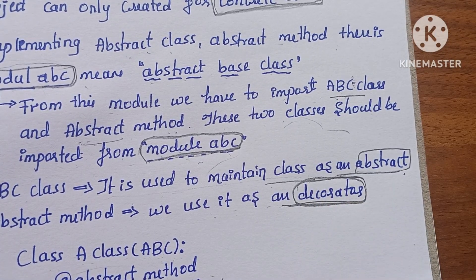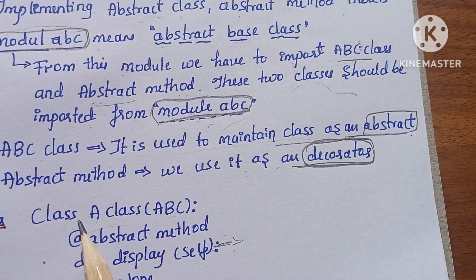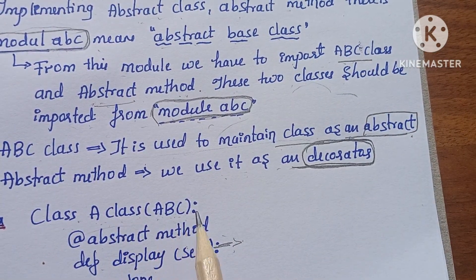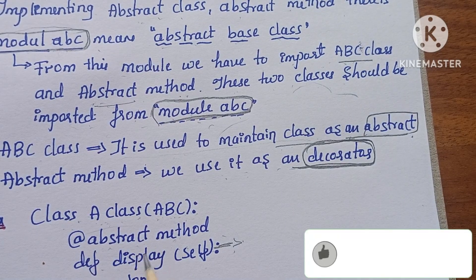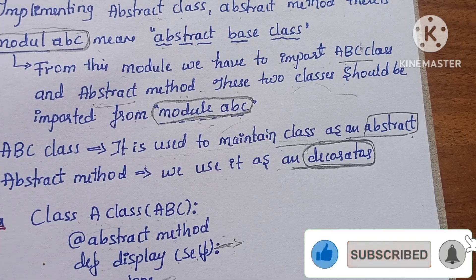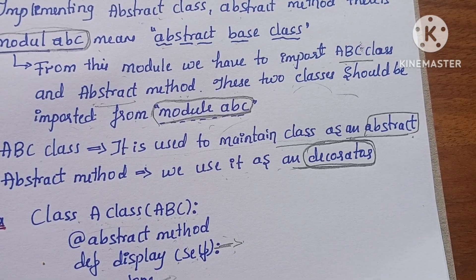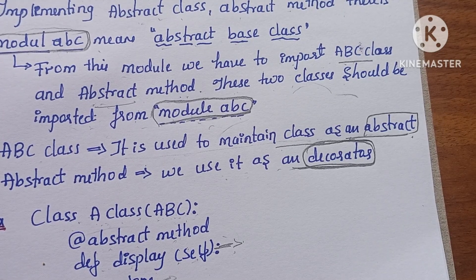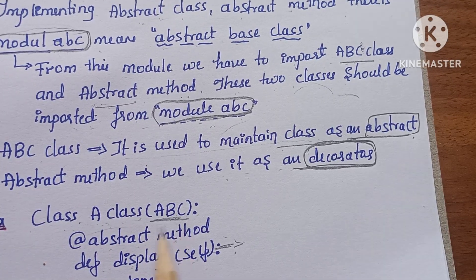So, let's do this example. Class A inherits ABC — making it an abstract class. Add the abstract method decorator: def display with self keyword. Then Class Demo implements it: def display self, print abstract method.